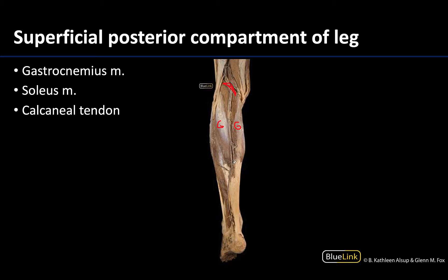About midway down the calf, where the bellies of the gastrocnemius end, is where you start getting the formation of the calcaneal tendon — your Achilles tendon. But also forming the calcaneal tendon, you will have a tendon from the soleus muscle, which you can see here deep to the gastrocnemius.